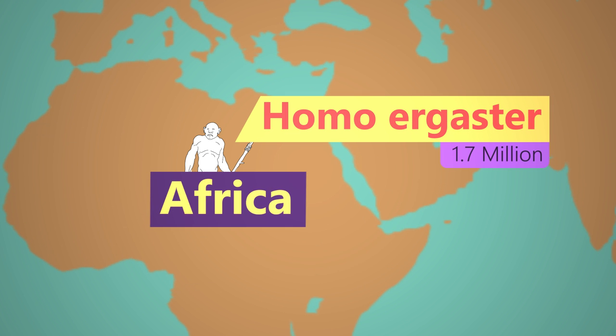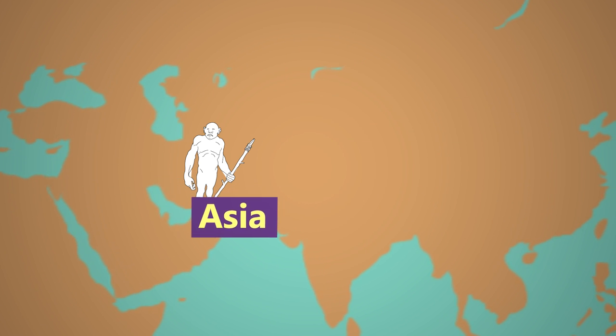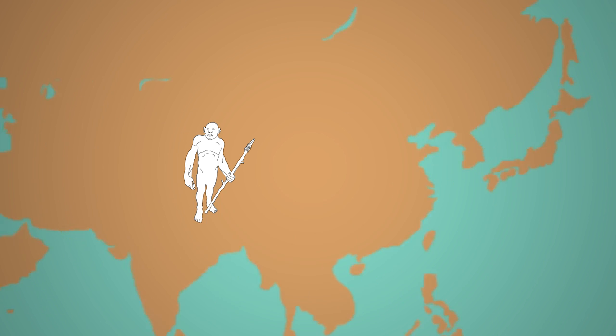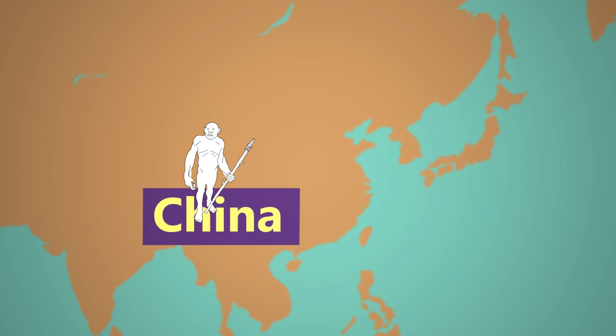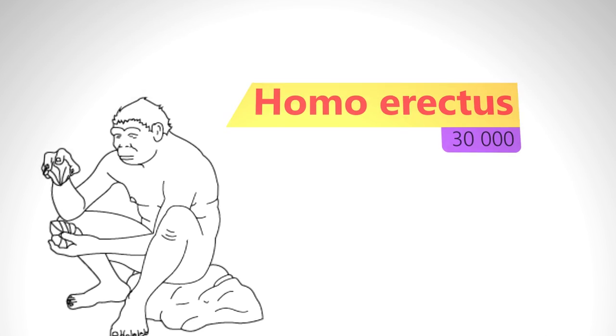Homo ergaster did leave Africa and colonized Asia in small populations, spreading from Turkey to China. Here in new environments evolved Homo erectus. Despite being bigger and more powerful than Homo sapiens, Homo erectus died out about 30,000 years ago, whereas Homo sapiens survived.